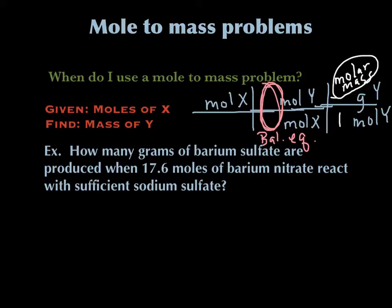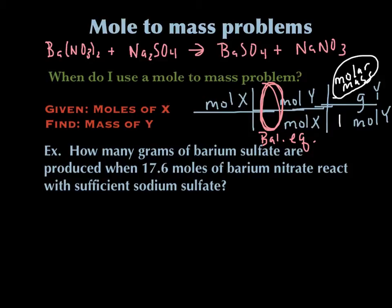Let's take a look at this problem. It says: how many grams of barium sulfate are produced when 17.6 moles of barium nitrate react with sufficient sodium sulfate? So we're given moles of something — barium nitrate — and we're asked to find grams of something else. So this is a mole to mass problem. The first thing you need to do is start with a balanced chemical equation. So I want you to pause it and write the balanced chemical equation. I've written the equation up here, and now we're going to balance it. I've got two NO3s on the left side and only one on the right side, so if I put a 2 in front of that, that makes two Na's on each side, one Ba on each side, and one set of SO4. So that's balanced.